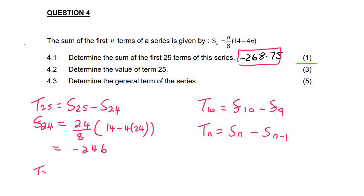So if we want to get term 25, we can just take the sum of 25 terms, which is this over here, minus, and then in brackets, 246. Or actually negative 246. That should be negative 246. And then if you work that out, we will get negative 22.75. And so that is term 25.